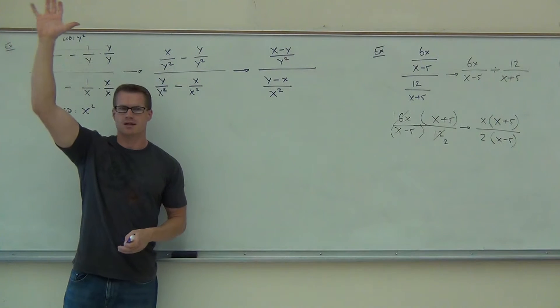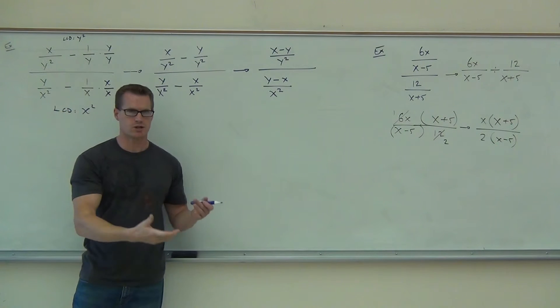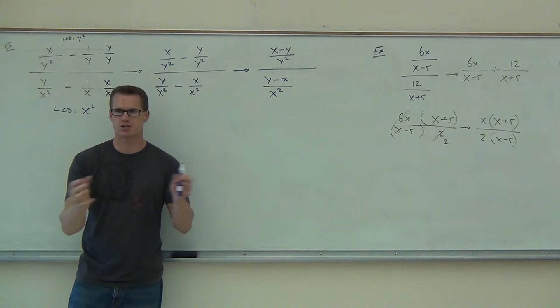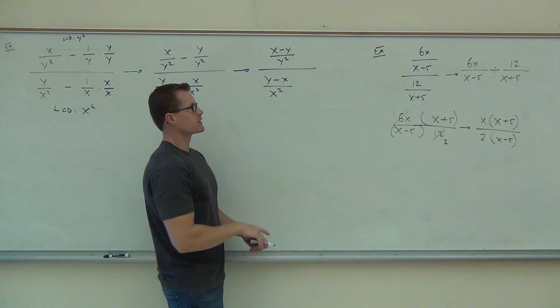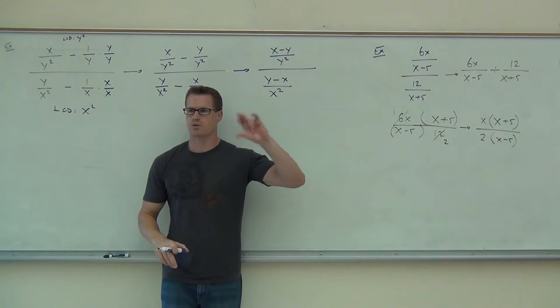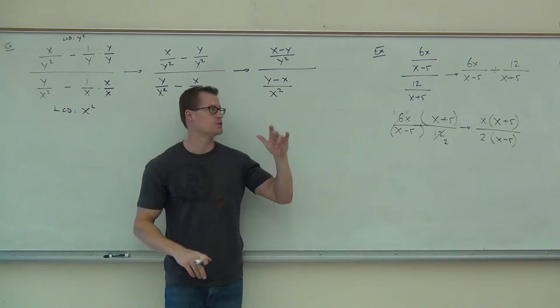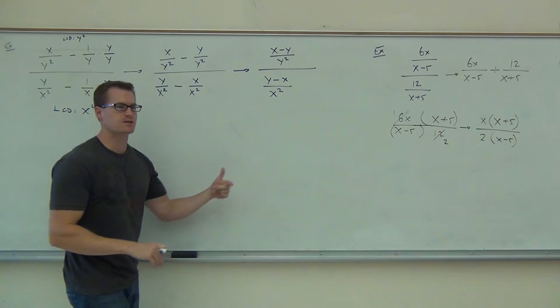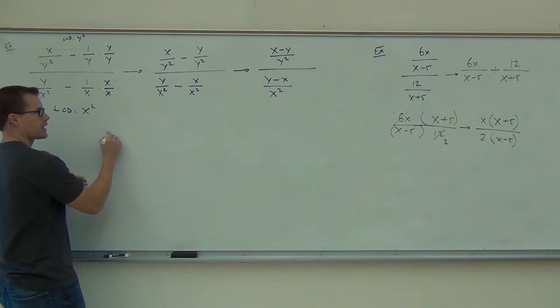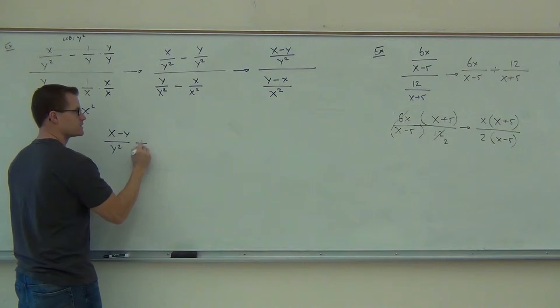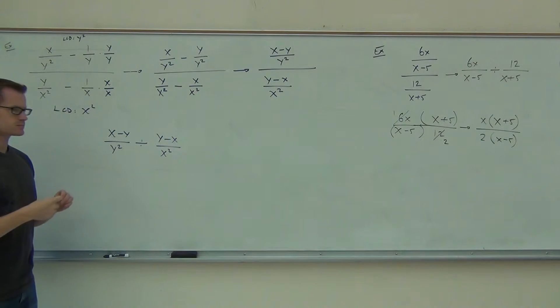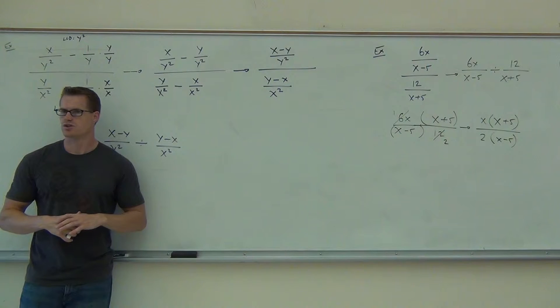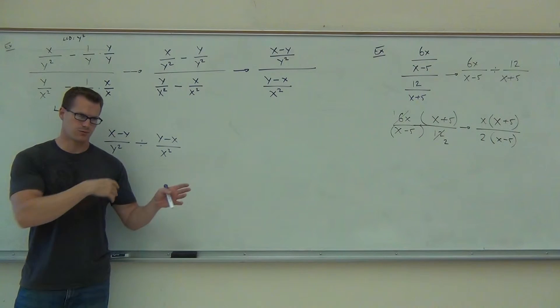Would you raise your hand if you feel okay getting that far? Good. I hope so, because that was all old stuff, right? We've done nothing new there. That was just adding or subtracting rational expressions. Now that we have this, can you verify that we have one fraction over one fraction? Yes. Sure. Now it's time to do step two. Now it's time to make that division problem. So what we're going to do, we're going to write this out and have x minus y over y squared divided by y minus x over x squared. Still so far so good? Should be almost home free from now on.